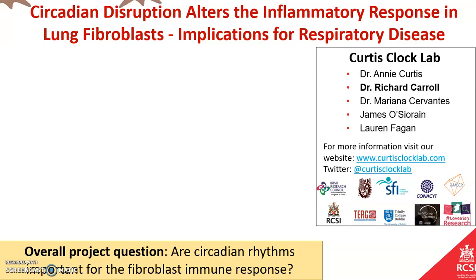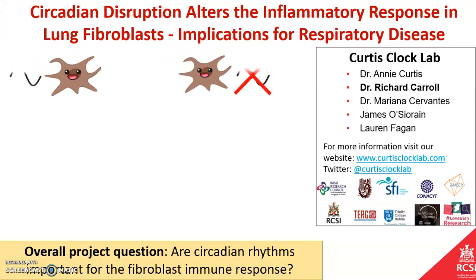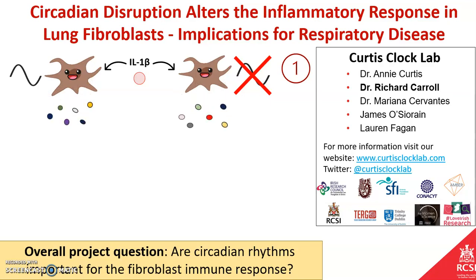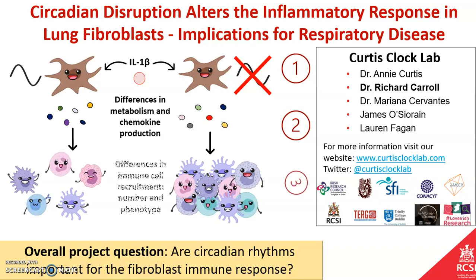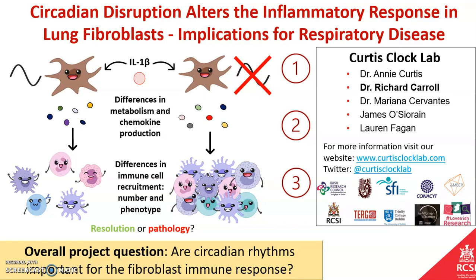We're currently investigating this question using three aims. Firstly, activate lung fibroblasts with and without rhythms with IL-1 beta. Secondly, we're comparing the differences in the rate of glycolysis and differences in chemokine production. We hypothesize that differences in glycolysis and chemokine production will lead to differential immune cell recruitment to the lung, which may have implications for resolution or pathology for respiratory disease progression in people with disrupted circadian rhythms.